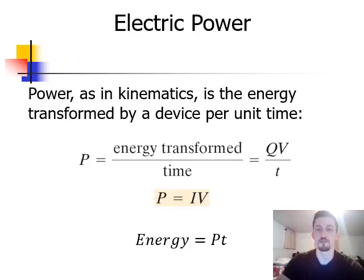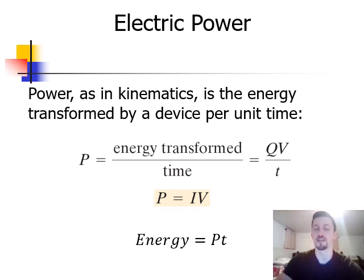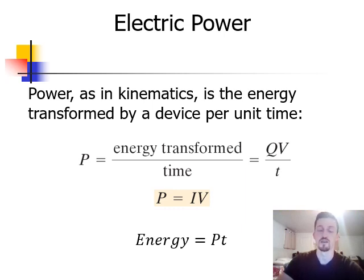Now we can start talking about electric power. This is the same as when you learned about power during kinematics. Electric power is going to be the energy transformed by a device per unit time. Power is equal to energy transformed divided by time, which for electricity is going to be equal to QV divided by T. And if we remember that Q over T is equal to current, or I, you can also say that power is equal to current times voltage, or P equals IV. And then if you multiply both sides by time, you can find that the total energy is going to equal the power times the time.